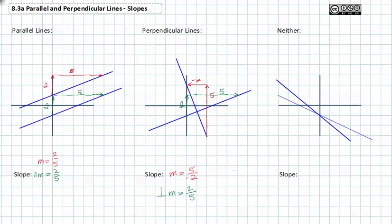We can say lines are parallel if the slopes are the same. Perpendicular lines have slopes that are the opposite reciprocals of each other. And then there are the odd occasions where you will find two lines that are neither parallel nor perpendicular.